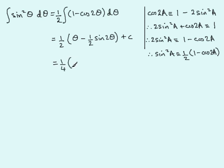And then, because I pulled the half out the front, this becomes 2 theta. And then we have minus sine 2 theta. And then we have the constant c. So this is a much more simplified version of this answer up here.